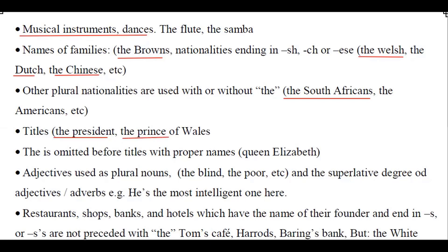Pay attention that 'the' is omitted before titles with proper nouns — we say 'Queen Elizabeth'. 'The' is also used with adjectives used as plural nouns, like 'the blind' referring to blind people, 'the poor' referring to people who are poor, and with the superlative degree of adjectives — for example, 'He is the most intelligent one.'